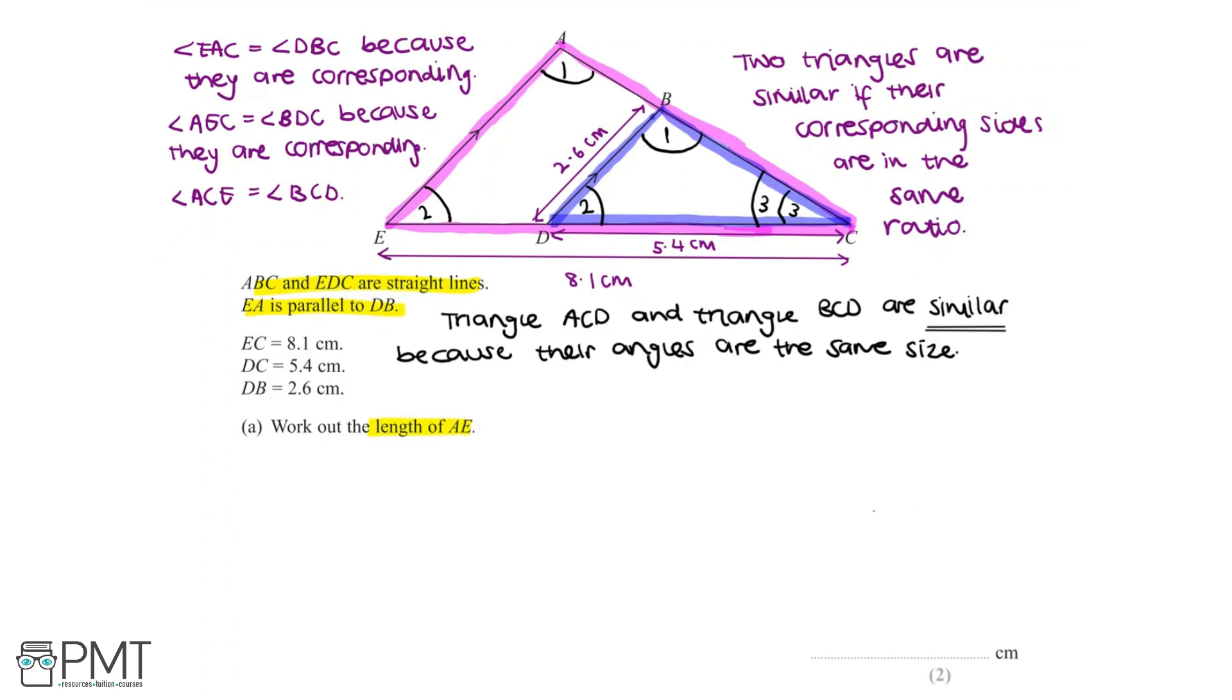Length DC must have been multiplied by a constant value in order to get the length EC. So we can find out this constant value by doing 8.1 divided by 5.4, which is equal to 1.5. And now that we've found the scale factor of 1.5, we can use the length DB in order to find the length AE.